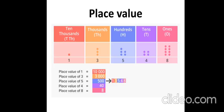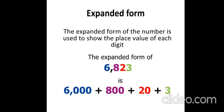On the whole, the number is 13,548. Place value represents the position of the number. Now we are going to see about expanded form. The expanded form of a number is used to show the place value of each digit. See the example number 6,823: by expanding, 6,000 plus 800 plus 20 plus 3. We expand a number by using its place value.